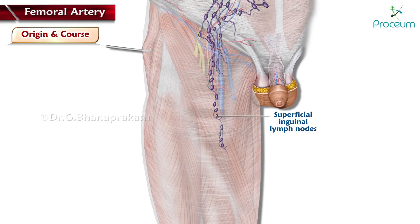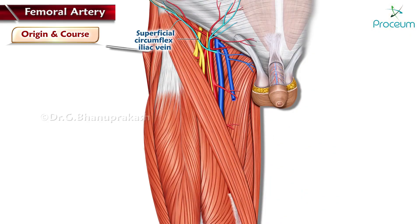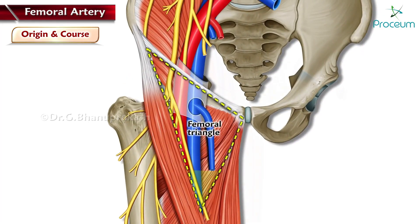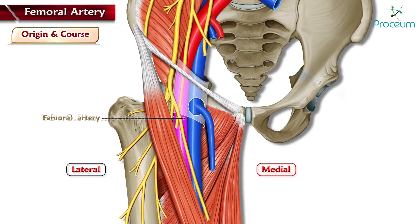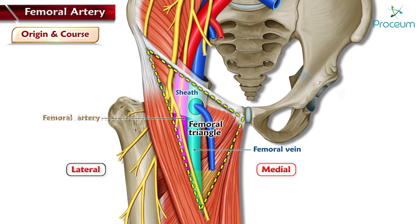inguinal lymph nodes, fascia lata, superficial circumflex iliac vein, and the femoral branch of the genitofemoral nerve. At the apex of the femoral triangle, the medial femoral cutaneous nerve crosses the artery in a lateral to medial direction. Proximally, the vein is medial to the femoral artery within the sheath; at the apex of the triangle, the vein is found deep to the artery.